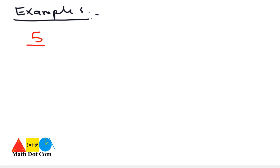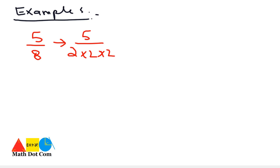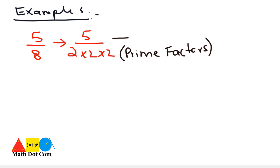If we are given 5 over 8 and asked to check whether it is terminating or non-terminating without division, we check its factors: 8 equals 2 into 2 into 2, and 2 is a prime factor. According to the rule, if the prime factors are 2 or 5, then it is terminating. So 5 over 8 is terminating.